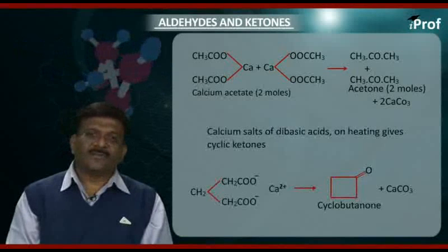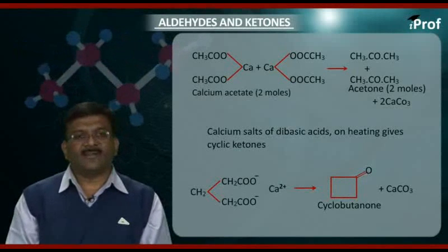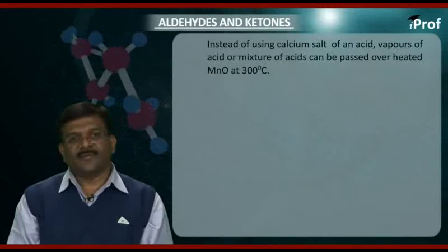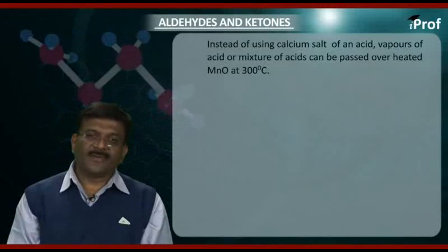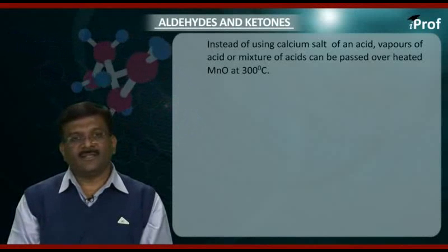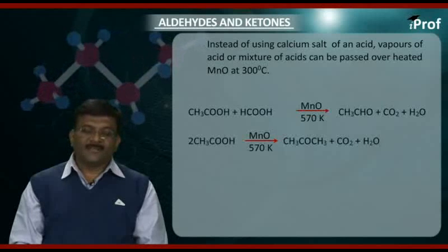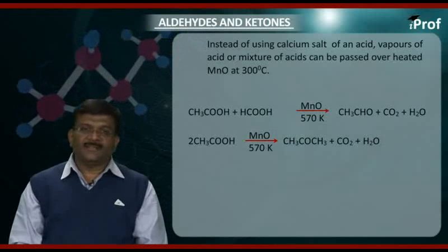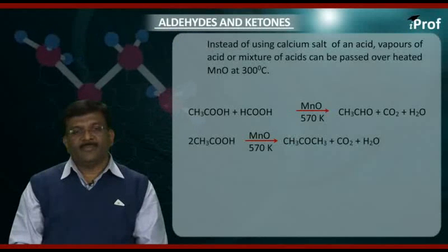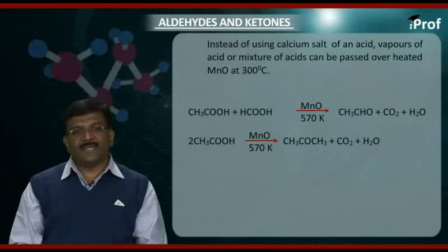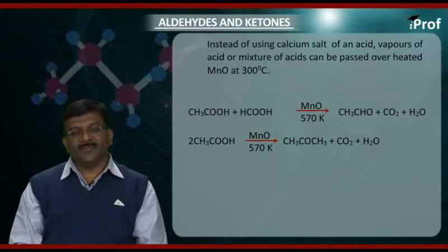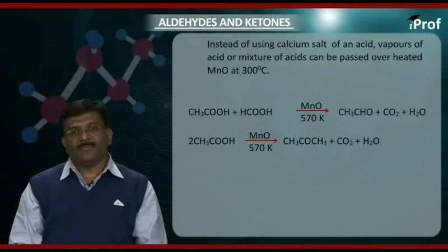Calcium salts of dibasic acids on heating gives cyclic ketones. Instead of using calcium salts of an acid, vapors of acid or mixture of acids can be passed over heated manganese oxide at 300 degrees centigrade. The reaction is CH3COOH plus HCOOH in presence of manganese oxide at 570 Kelvin, giving CH3CHO plus CO2 plus water.